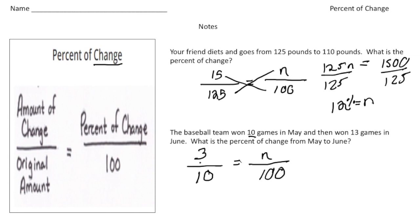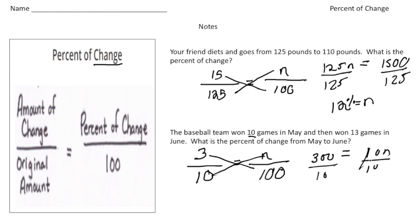Going from 10 games to 13 games is a change of 3, so 3 goes where the amount of change is. We write our equation: 3 times 100 is 300, and that equals n times 10, which is 10n. Dividing both sides by 10 gives us 30. So the baseball team had a 30% increase in wins from May to June.